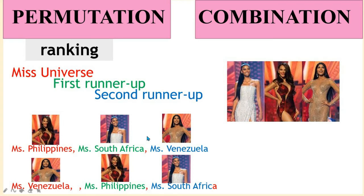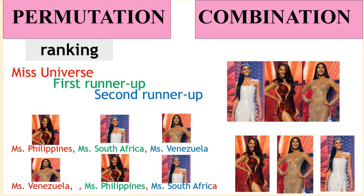Now if the order does not matter, say for example we choose a group of three candidates from among ten candidates — Miss South Africa, Miss Philippines, and Miss Venezuela — without ranking, this is the same group as having Miss Philippines, Miss Venezuela, and Miss South Africa.